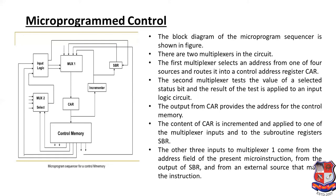The output from the control address register provides the address for control memory. The content of the CAR is incremented and applied to one of the multiplexer inputs and to the subroutine register. The incremented value goes either to multiplexer one or to the subroutine register. The other three inputs to multiplexer one come from the address field of the present micro instruction, from the output of the subroutine register, and from an external source via mapping logic.